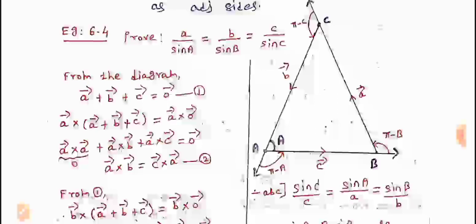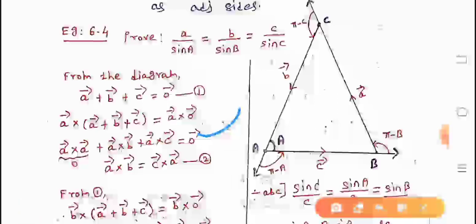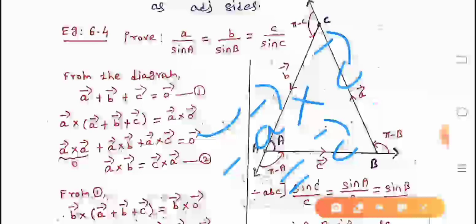A vector cross (a + b + c) equals A vector cross zero vector. Expanding: A vector cross A vector plus A vector cross B vector plus A vector cross C vector equals zero. Since A cross A equals zero (same vector cross product), we get A cross B plus A cross C equals zero. Since cross product is non-commutative, minus A cross C equals C cross A. So A cross B equals C cross A. Mark this as equation 2.